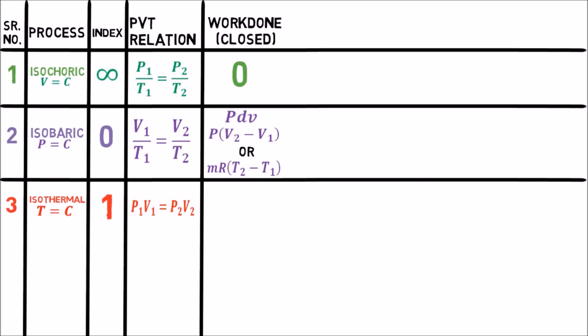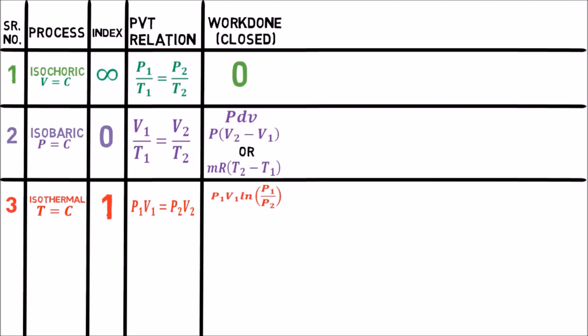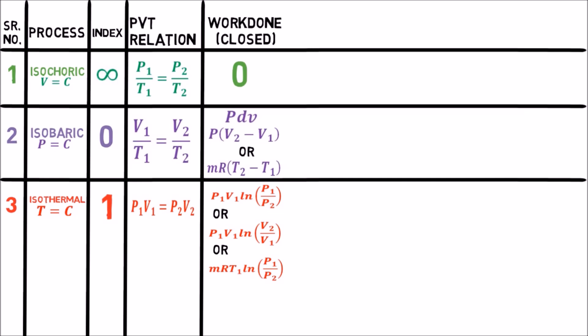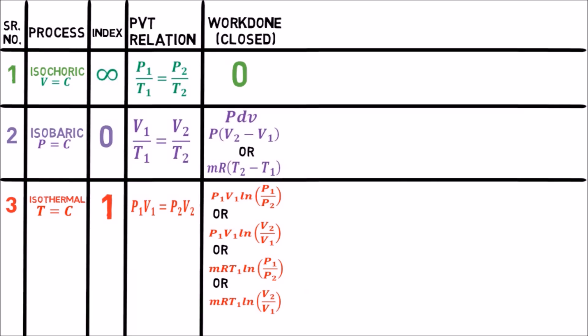The formula of work done for isothermal process is P1V1 ln(P1/P2) or P1V1 ln(V2/V1). And if you replace P1V1 by mRT1 from the characteristic equation in both formulas, you get a total of four formulas for work done for isothermal process. These are also derived from integration of P dV only.